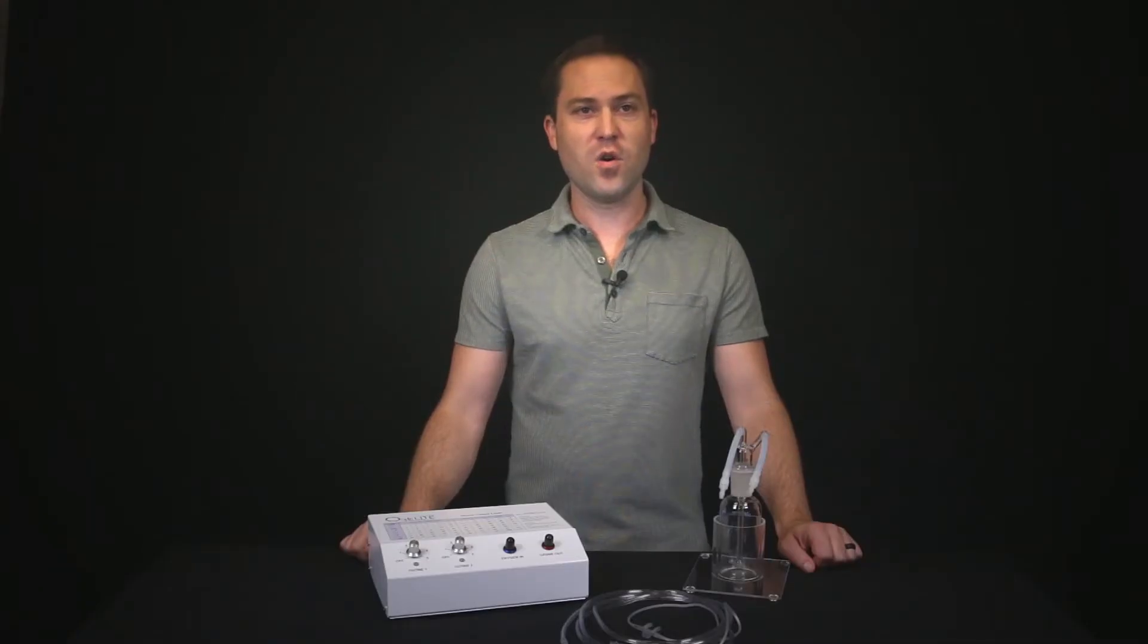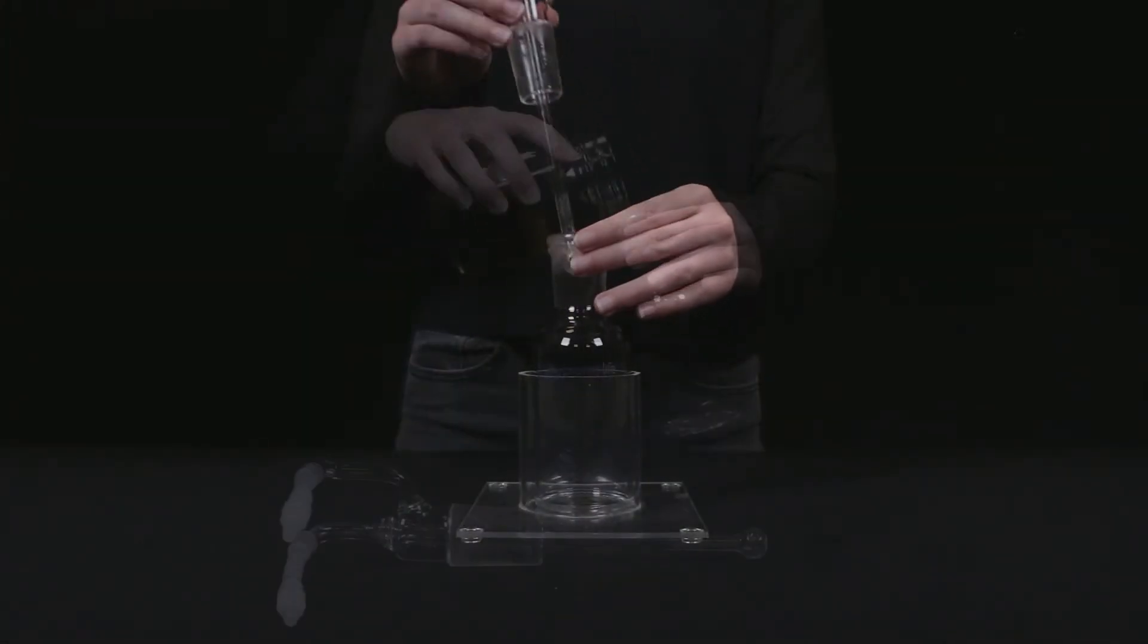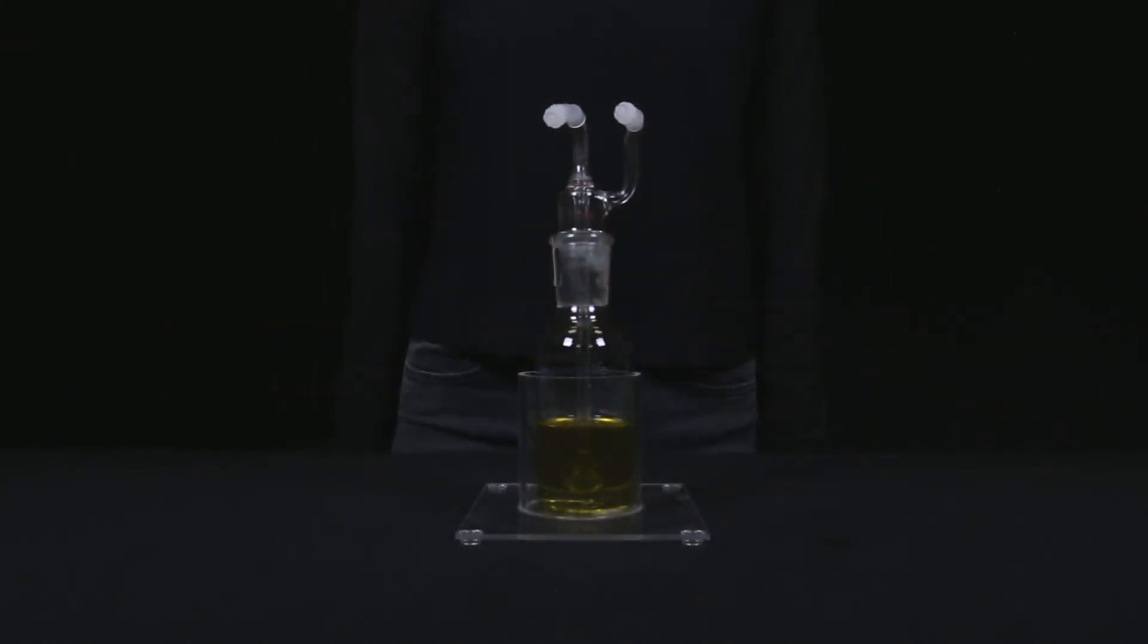You will then need to fill your oil bubbler to the desired amount, but always make sure the diffuser is covered. If you plan on using your oil bubbler for ozone breathing, you will want to fill it a little more than halfway. You do this by taking the stem out, filling the jar, placing the stem back in the jar, and then placing the jar back into its stand.